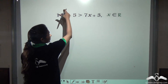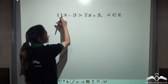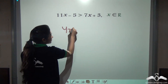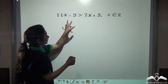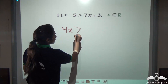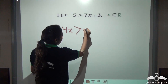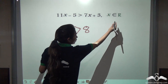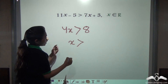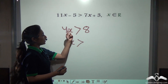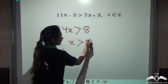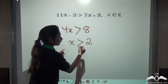Bring both the variables to one side: 11x minus 7x gives us 4x, and minus 5 taken to the other side gives us 5 plus 3, which is 8. So this can be written as 4x is greater than 8. Dividing both sides by 4, you get x is greater than 2.